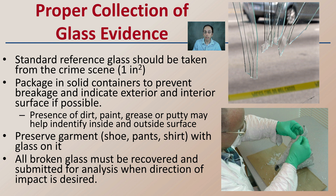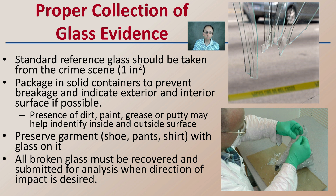We want to package it in a solid container to prevent breakage and indicate interior and exterior surfaces if possible. The presence of dirt, paint, grease, or putty may help identify the inside and outside surfaces. If you're looking at a piece of glass from a window and you know where the outside is, make note of what side that is on the glass you're collecting. We want to preserve garments with glass on them, including shoes, pants, even shirts — anything that may have that potential for carrying trace evidence. All broken glass must be recovered and submitted to analysis when direction of impact is desired.